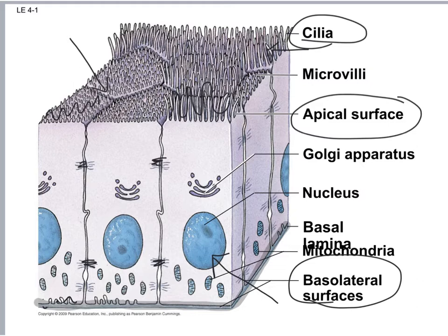The last characteristic is that epithelial cells have the ability to regenerate — they can go through mitosis and produce daughter cells. Not all cells in your body can do that. When there are multiple layers of epithelial cells, it's the bottommost layer connected to the basement membrane that regenerates, pushing new cells up toward the surface.